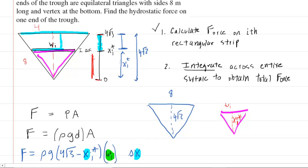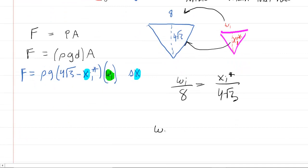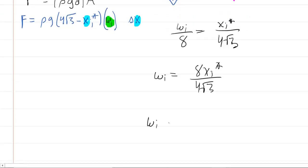So what's nice is we can set up a proportion to express w sub i in terms of x. So it's just a basic proportion. We could say w sub i is to eight as xi star is to four radical three. And then we will multiply both sides of the equation by eight. So now we have w sub i is equal to eight x sub i star over four radical three. And we can reduce by dividing numerator and denominator by four. So we get two x sub i star over radical three. That's awesome. Now we have w sub i in terms of x. So we'll fill it in right there.